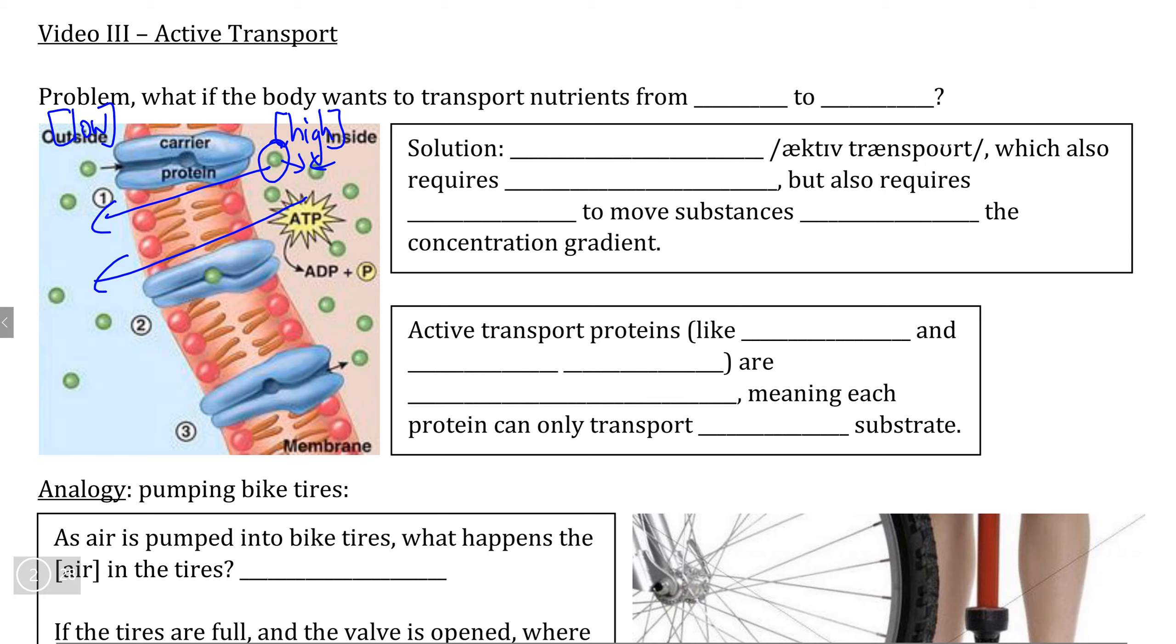However, there are many situations in your cells and throughout the body where the body wants to move substrate particles in the opposite direction, from an area of low concentration to an area of high concentration. This is moving substances against the concentration gradient, meaning in the opposite direction as they would normally travel.